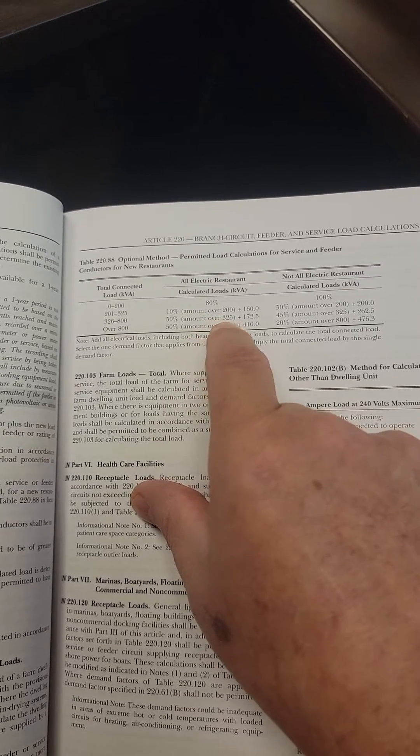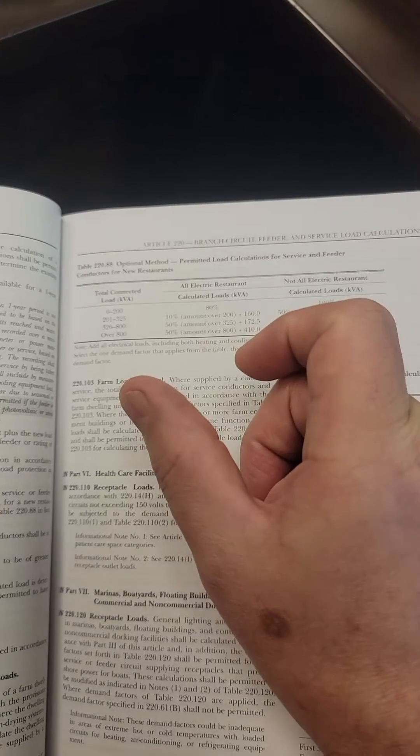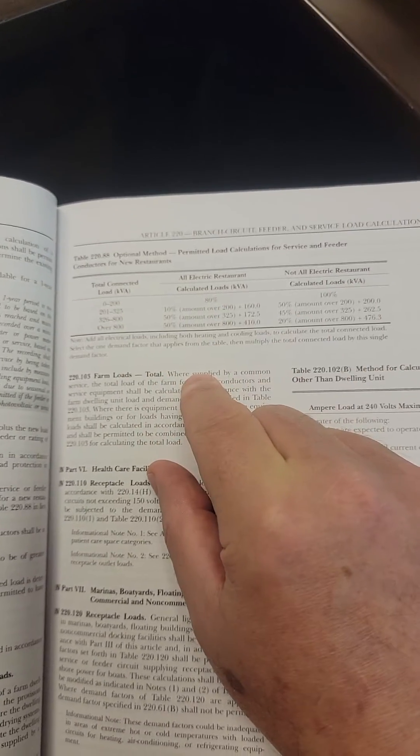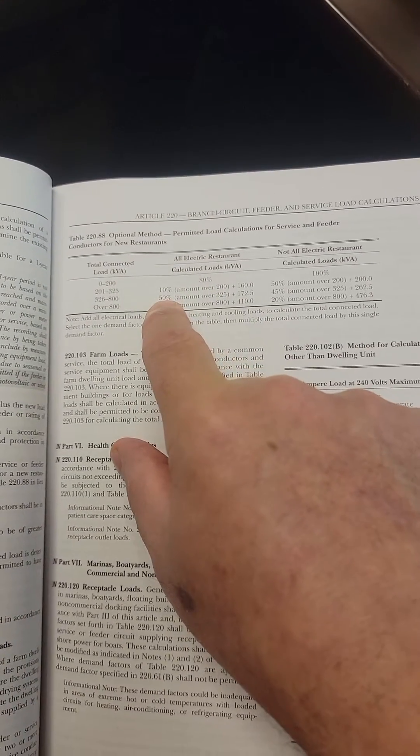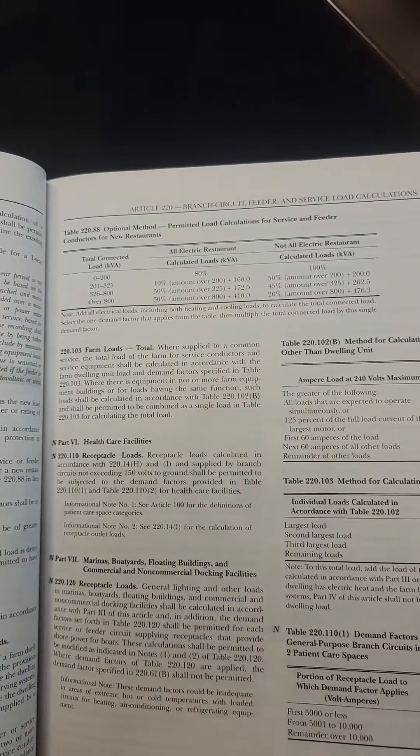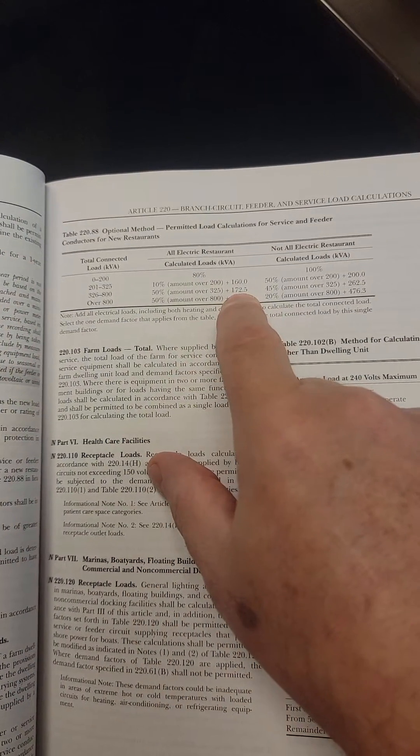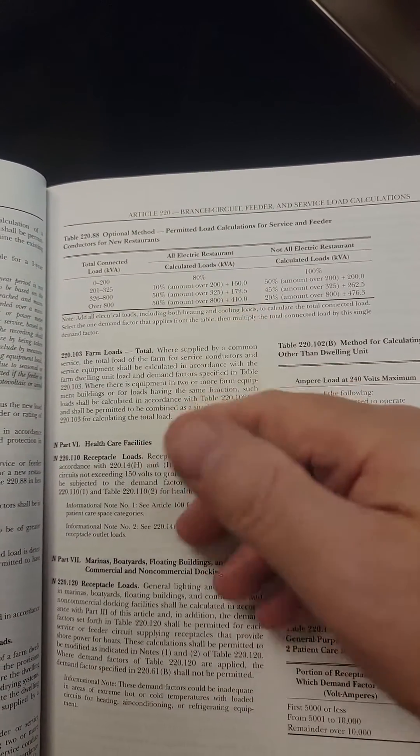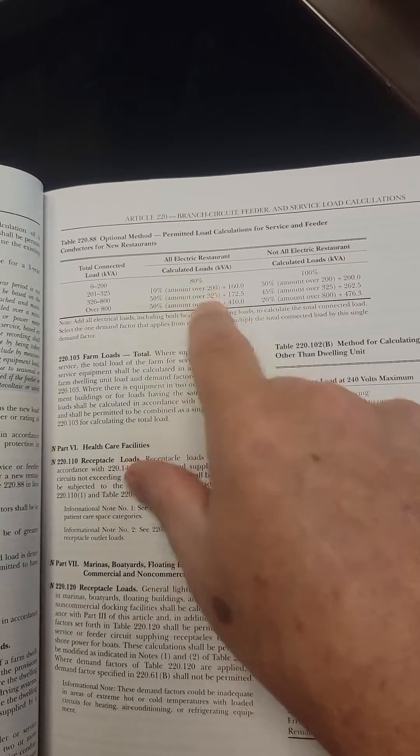You take away 325 from it. The amount that you have, the remainder, you multiply that by 50%. And whatever that value is, you add 172.5 to that. And that is your calculated load.